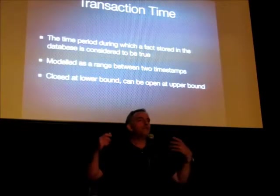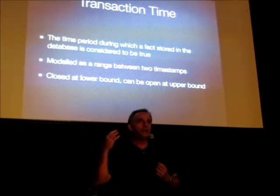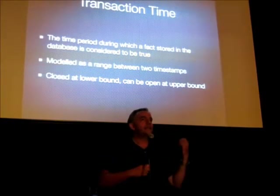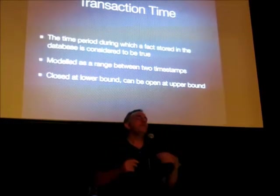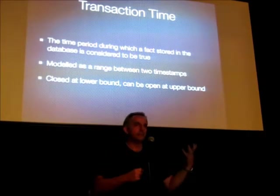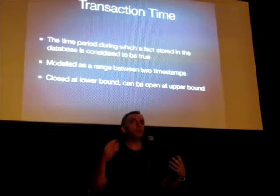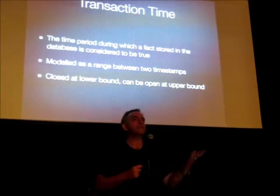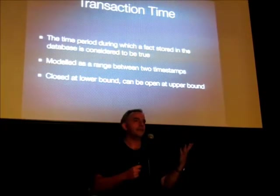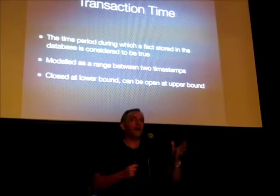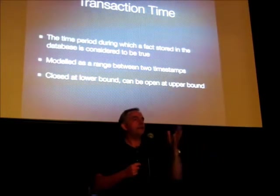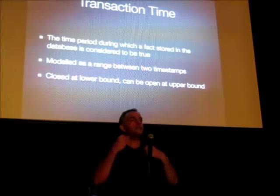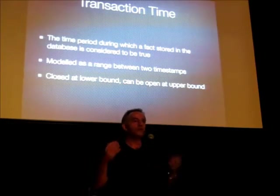Transaction time is really the period of time that we actually believe this piece of data to be true in the real world. This is different to valid time. Valid time models when in the real world we consider this piece of data to be true. Transaction time models when this data is actually the truth. Here's a simple example: I can believe that the sky is green — let's say I have some form of colour blindness. From when I was born in 1972 to now, I've believed the sky is green. Someone today categorically proves to me that the sky is blue. We want to record when I started to believe that, so we would use transaction time to do that.